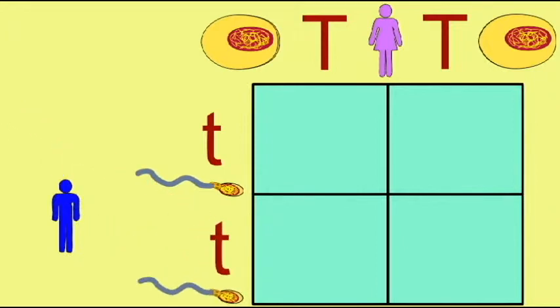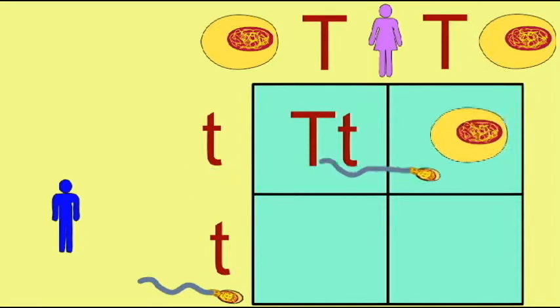Males will put half their alleles into one type of gamete and half into a different kind, and so would females. It then becomes a statistical issue which gametes fuse with which gametes from the opposite gender.